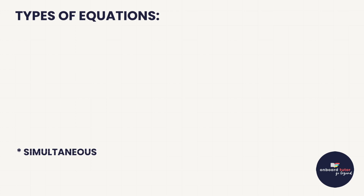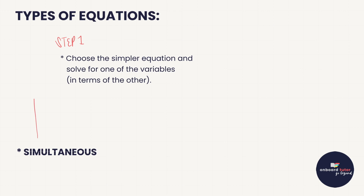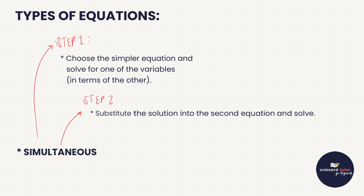What I want to do is just break down the steps that we can use that'll always help us to solve these types of equations. The first thing you do is look at the two equations and decide which one is simpler, and solve it so that you get one of the variables on its own — either x on its own or y on its own. Once you've done that, the next step is to take the solution and substitute it into the second equation. So you're going to take whatever you had — x equals something — and put that something into the second equation.